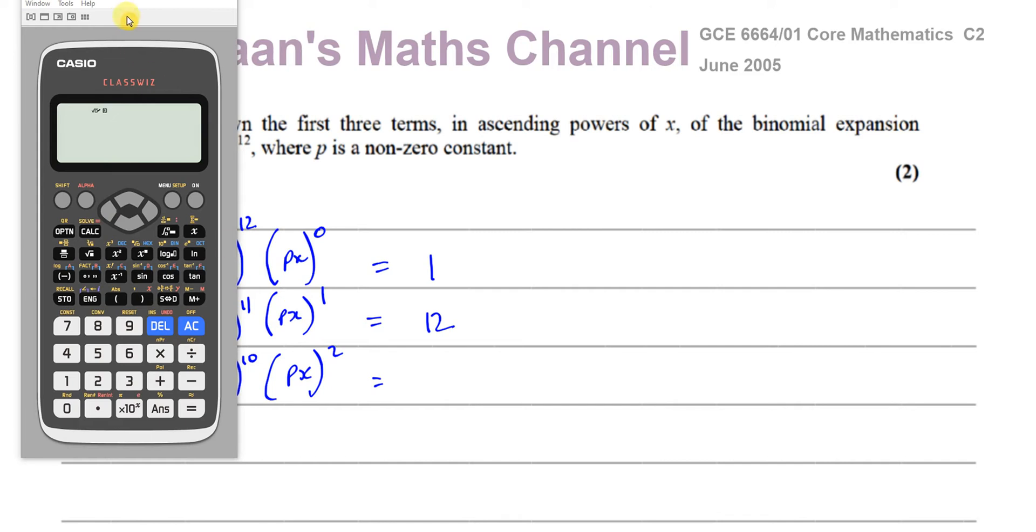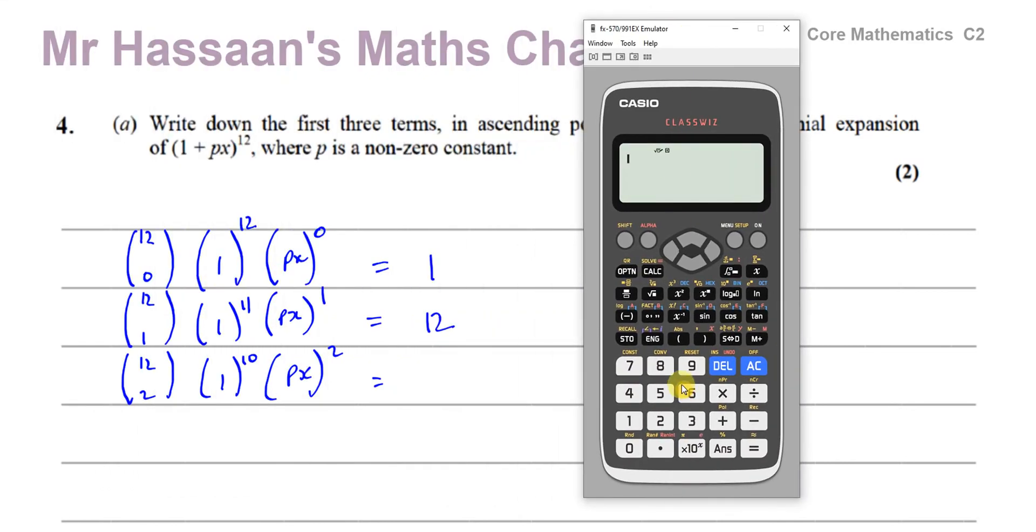Okay, so 12C2, so we take our calculator, and we type 12, and then shift, and this button, which is just on top of the division sign, it says NCR. So you press shift on the division sign, that gives you C.